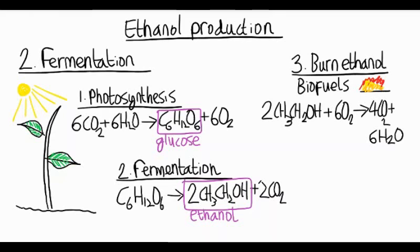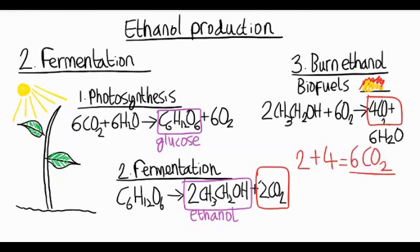Now, both in fermentation and burning ethanol, carbon dioxide is released. And this is a problem because carbon dioxide contributes to global warming. It's a greenhouse gas. So we've got two molecules of carbon dioxide in fermentation plus four in burning gives us six molecules of carbon dioxide being emitted into the atmosphere.